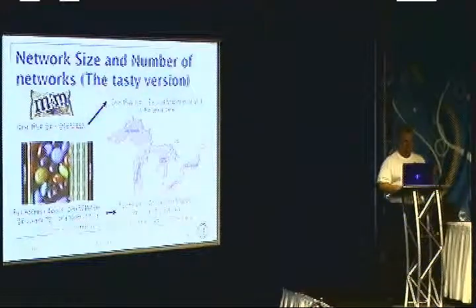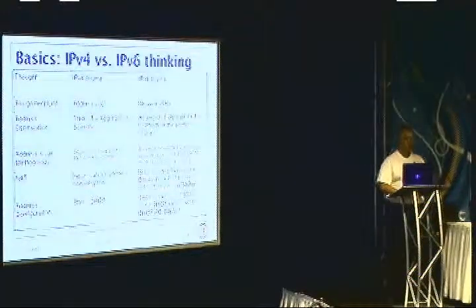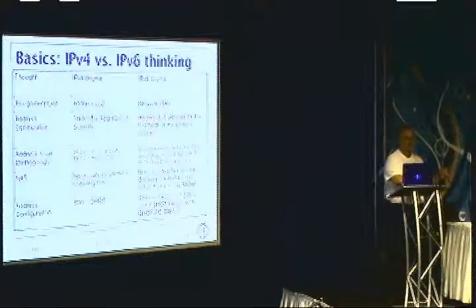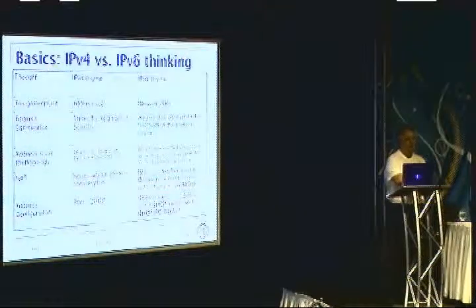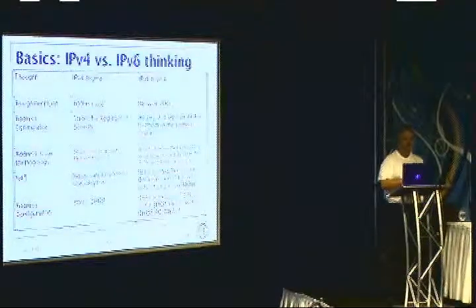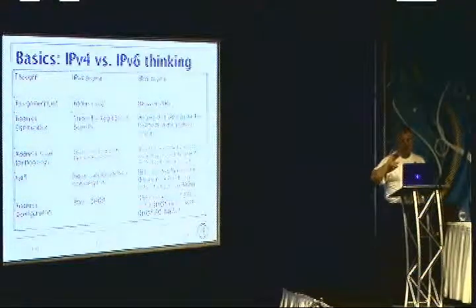This means we need to change our thinking. In IPv4 we thought about assigning addresses to hosts — if we needed six hosts we gave it a /29, seven hosts required a /28, and we hated wasting those extra addresses. In IPv6, just give the network a /64. Whether it's two hosts, 200 hosts, or 2,000 hosts, give it a /64 and be done with it.